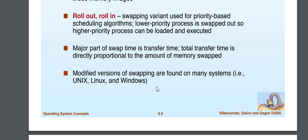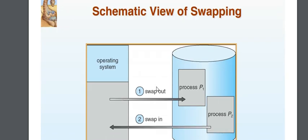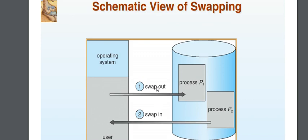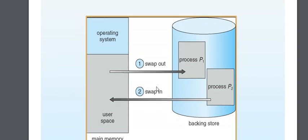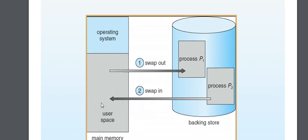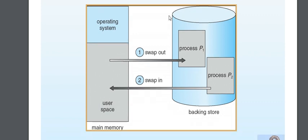This is a systematic view of swapping. The OS operating system handles the swap-out process. There is a backing store process where processes are backed up and can be swapped in or out as needed.